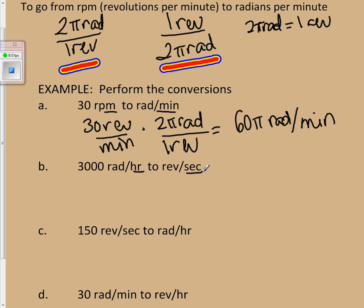So, the first thing is, let's take care of the 3,000 radians per hour. Let's do that conversion. So, let's do the 3,000 radians per hour, and I want to get rid of radians, and so I have 1 revolution over 2 pi radians.